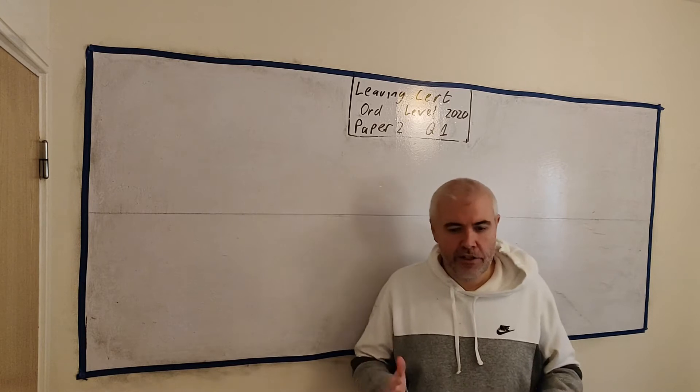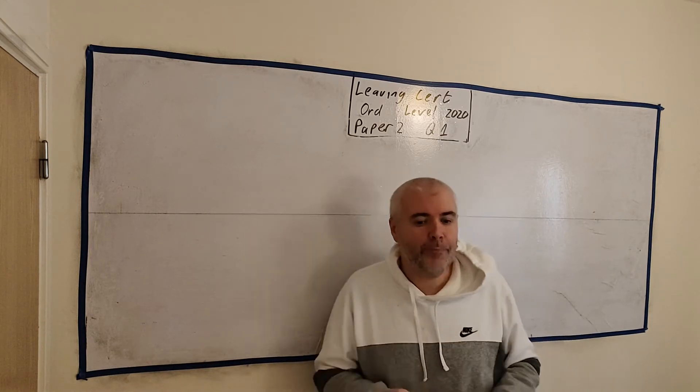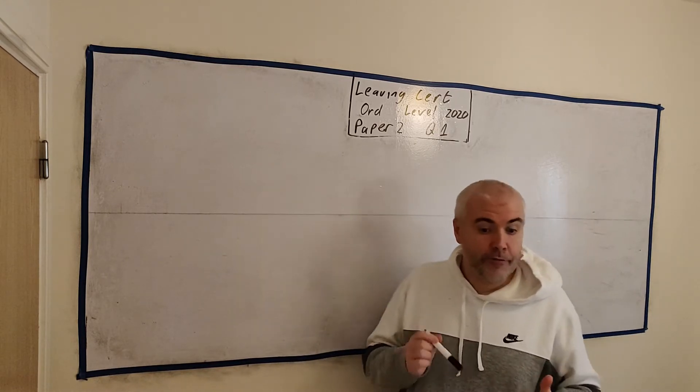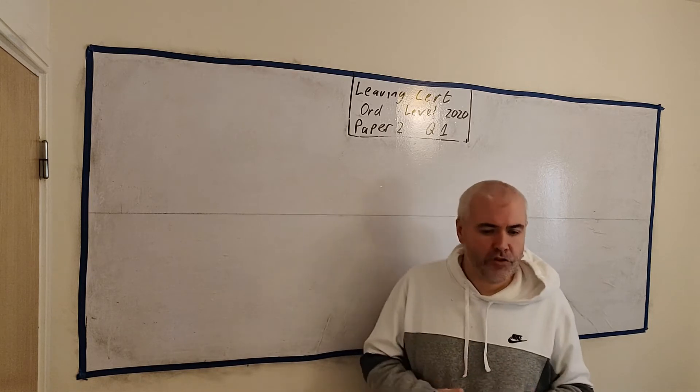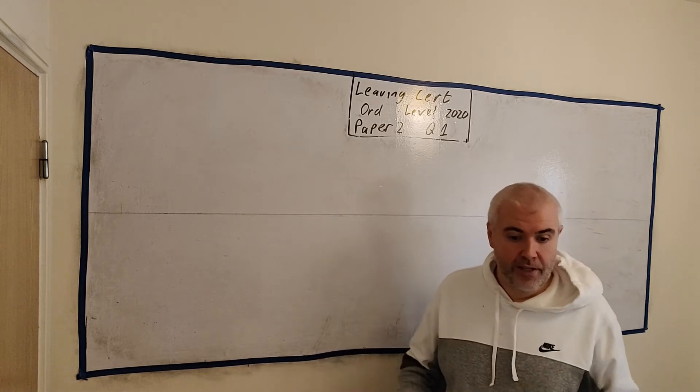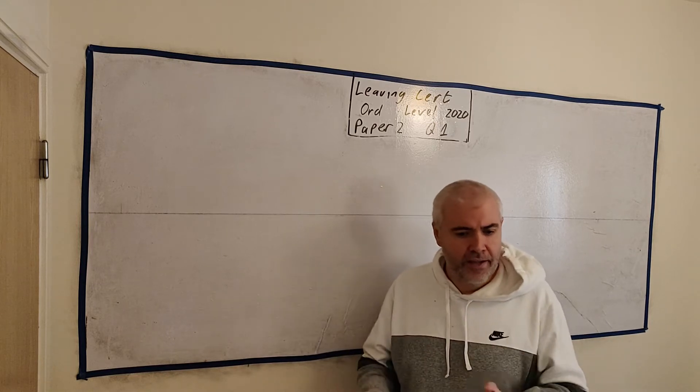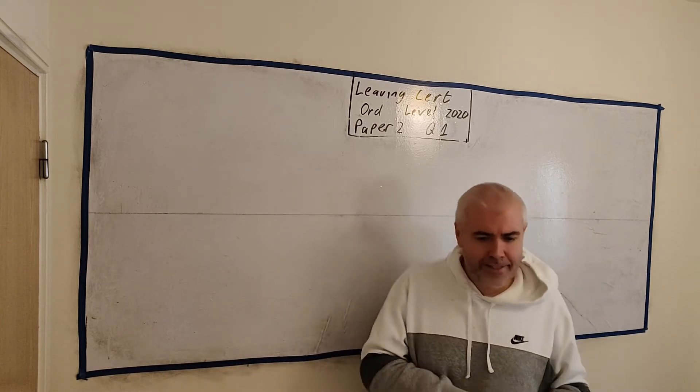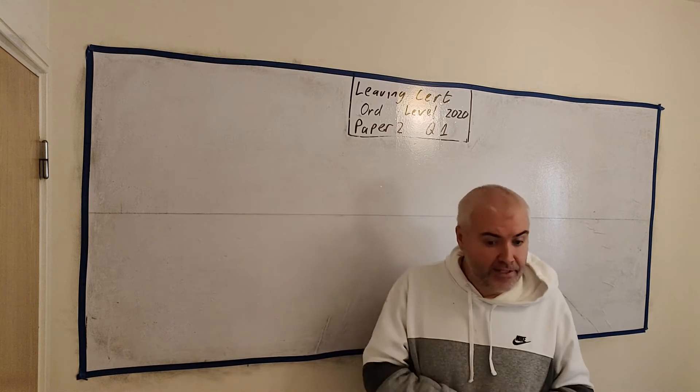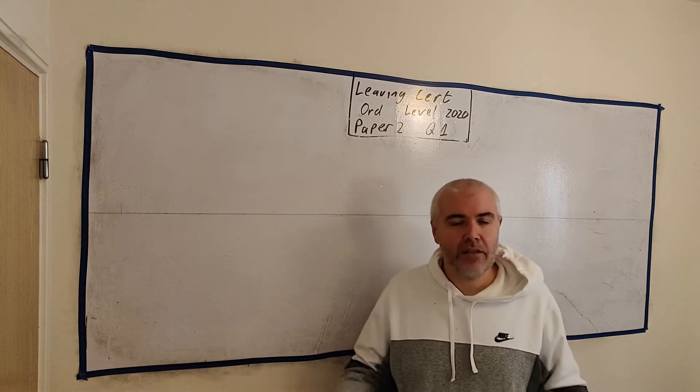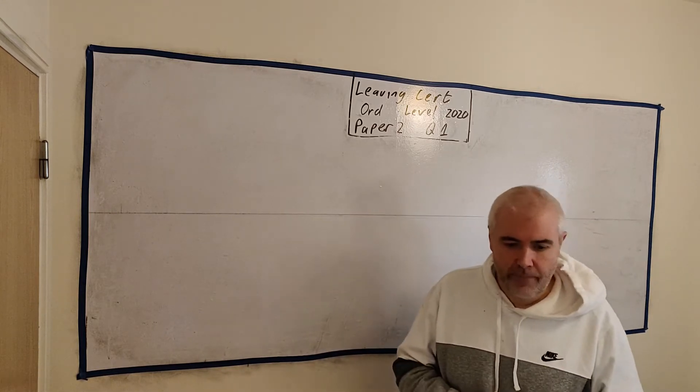This question is a lot of English, but it's about counting and a little bit of probability. The first part tells us about a restaurant that has three different options: a starter, a main, and a dessert. There's four starters, six mains, and eight different desserts. How many different meals can I have?